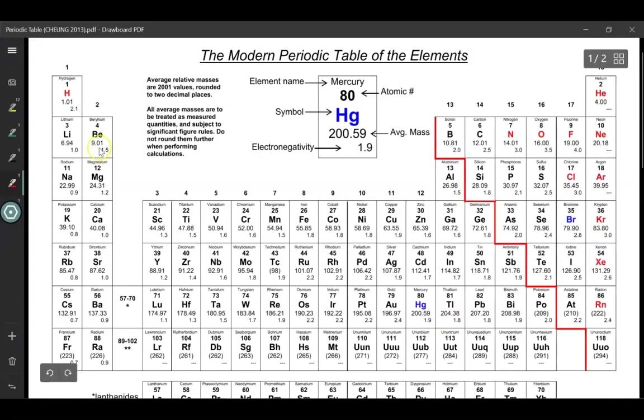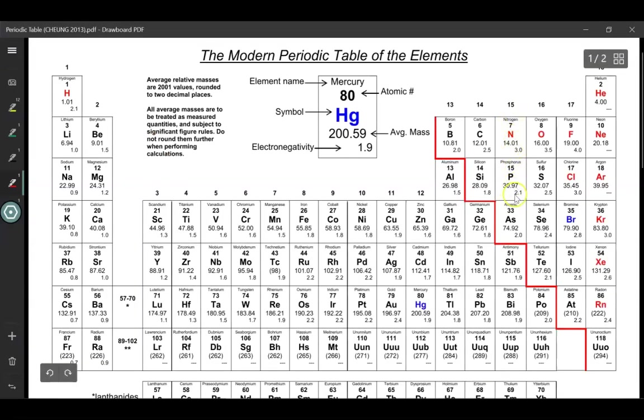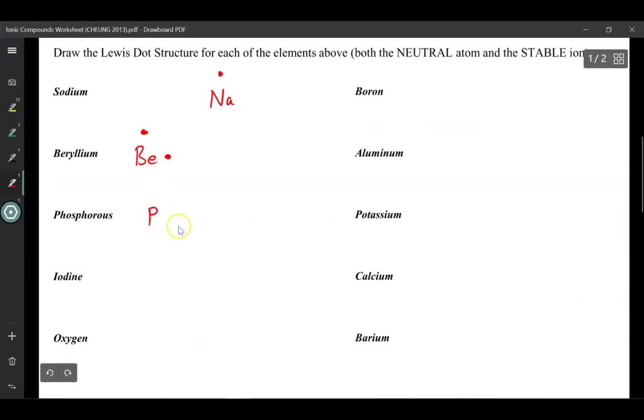Alright, beryllium is in group 2, so we draw 2 valence electrons around its chemical symbol. Phosphorus is in group 15, or 5A, so it has 5 valence electrons. Just like in the Bohr-Rutherford diagrams, I want you to draw them in the north, east, south, and west locations, and then start doubling them up if we need to. So there's our 5 electrons.